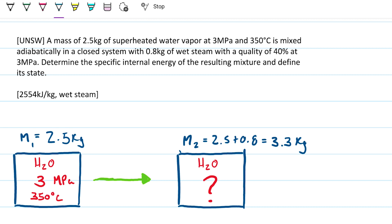This is a question by UNSW and the problem statement reads: A mass of 2.5 kilograms of superheated water vapor at 3 megapascals and 350 degrees Celsius is mixed adiabatically in a closed system with 0.8 kilograms of wet steam with a quality of 40% at 3 megapascals. Determine the specific internal energy of the resulting mixture and define its state. So our task is,